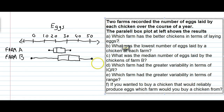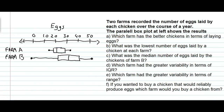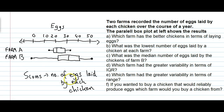Let's look at an example question and interpret the parallel box plot to answer questions about the data. In this case, we've got two farms, and each farm has chickens. Over the course of the year, the two farms recorded how many eggs each chicken laid. The parallel box plots show the results of that study. Farm A is the upper box plot and farm B is the lower box plot. The data represents the number of eggs laid by each chicken on the various farms.